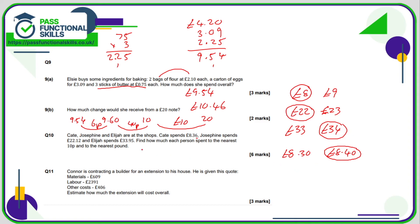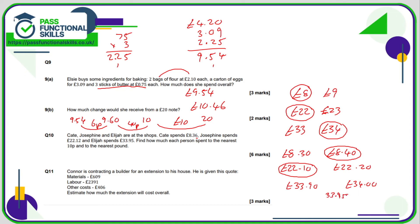£8.35 is the halfway point between £8.30 and £8.40, so £8.36 rounds up to £8.40. Josephine's £22.12 is between £22.10 and £22.20; the halfway point is £22.15 and £22.12 is less than that, so it rounds down to £22.10. £33.95 is between £33.90 and £34.00; the halfway point is exactly £33.95 — since the amount is exactly halfway, we round up to £34.00.